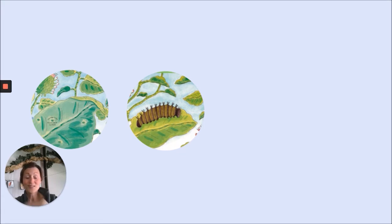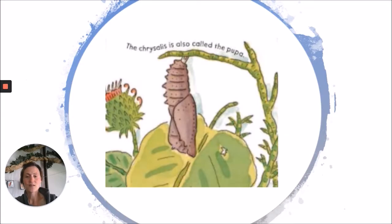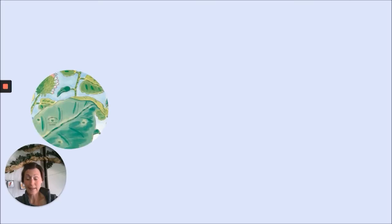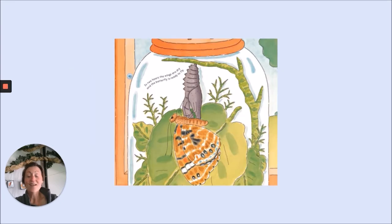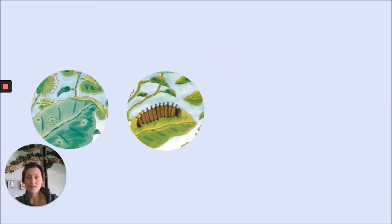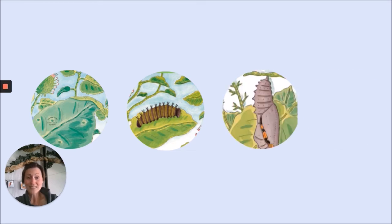What happened next? That's right — the caterpillar molts. After the caterpillar molts four or five times out of its skin, the last time it molts, it molts into a special house called a chrysalis. Egg, caterpillar, chrysalis. What was the last step? Last, out of that chrysalis comes a butterfly. In this text, the butterfly was a painted lady butterfly. So beautiful. Egg, caterpillar, chrysalis, butterfly.